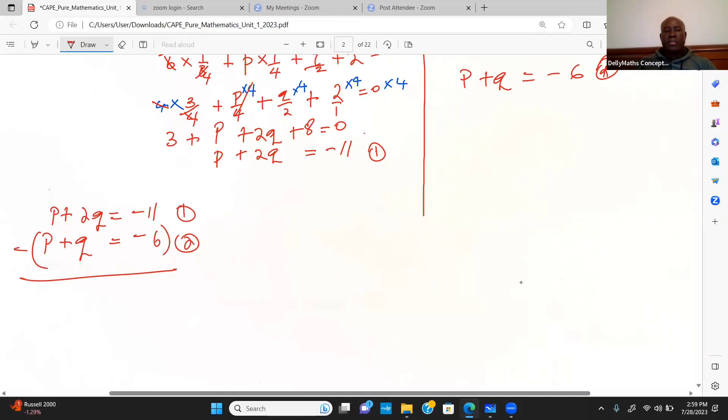p minus p, this is 0. 2 minus 1, so I have a q. 2q minus q is q. And then negative 11 minus negative 6, this becomes plus, so q is equal to negative 5.